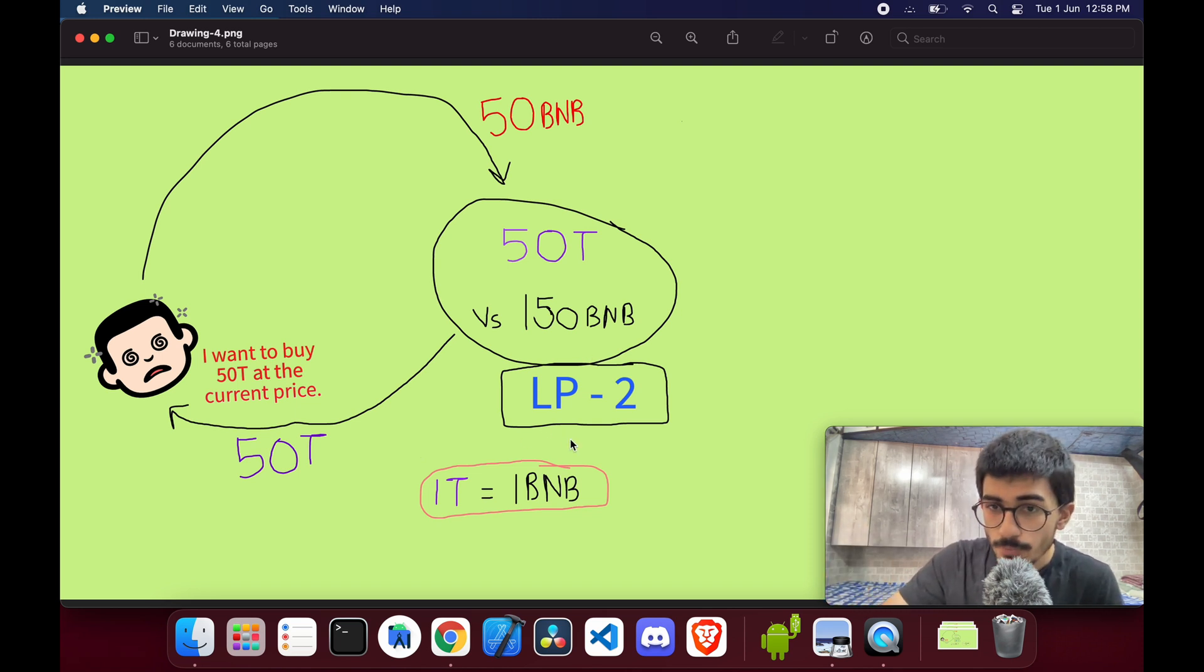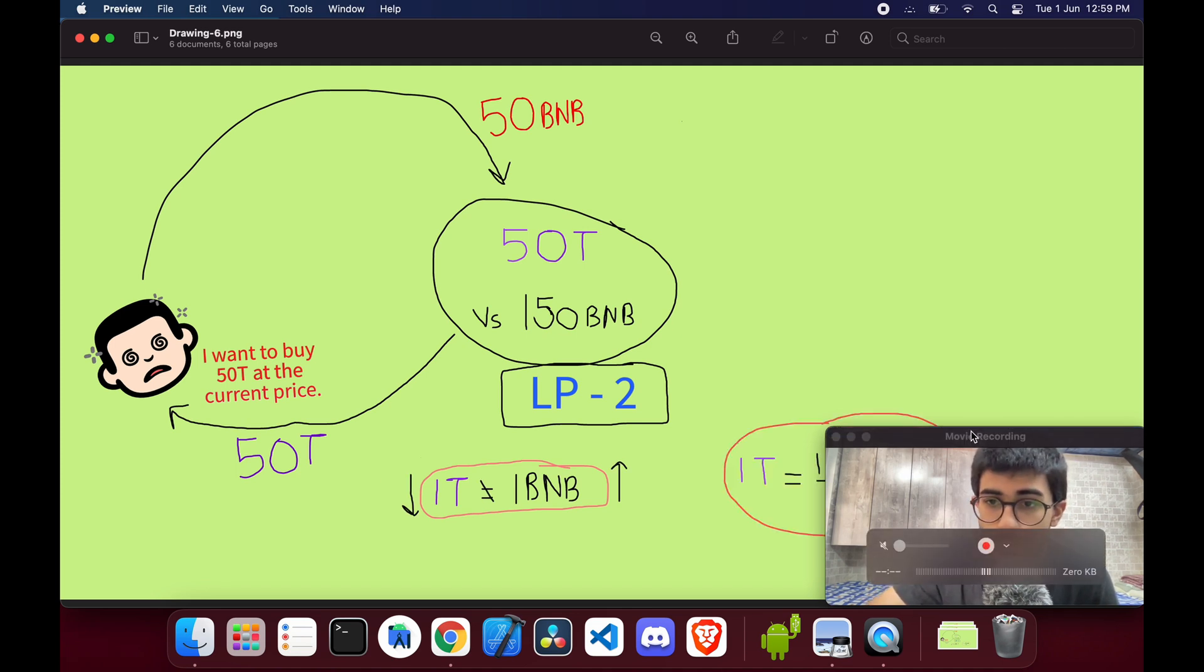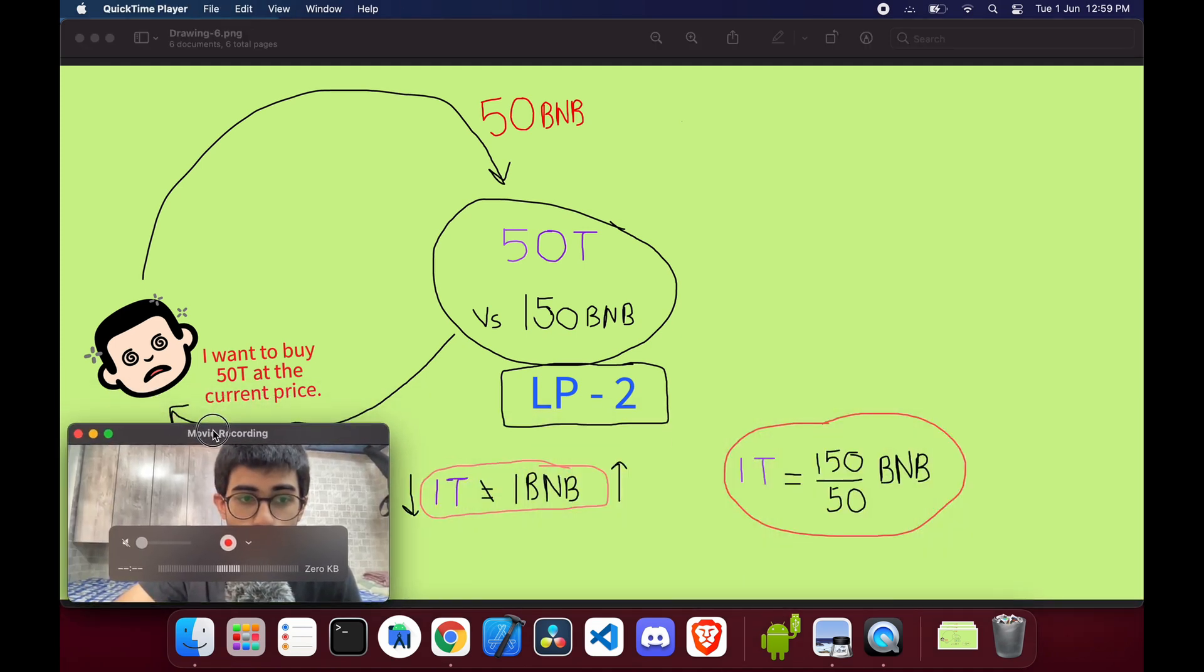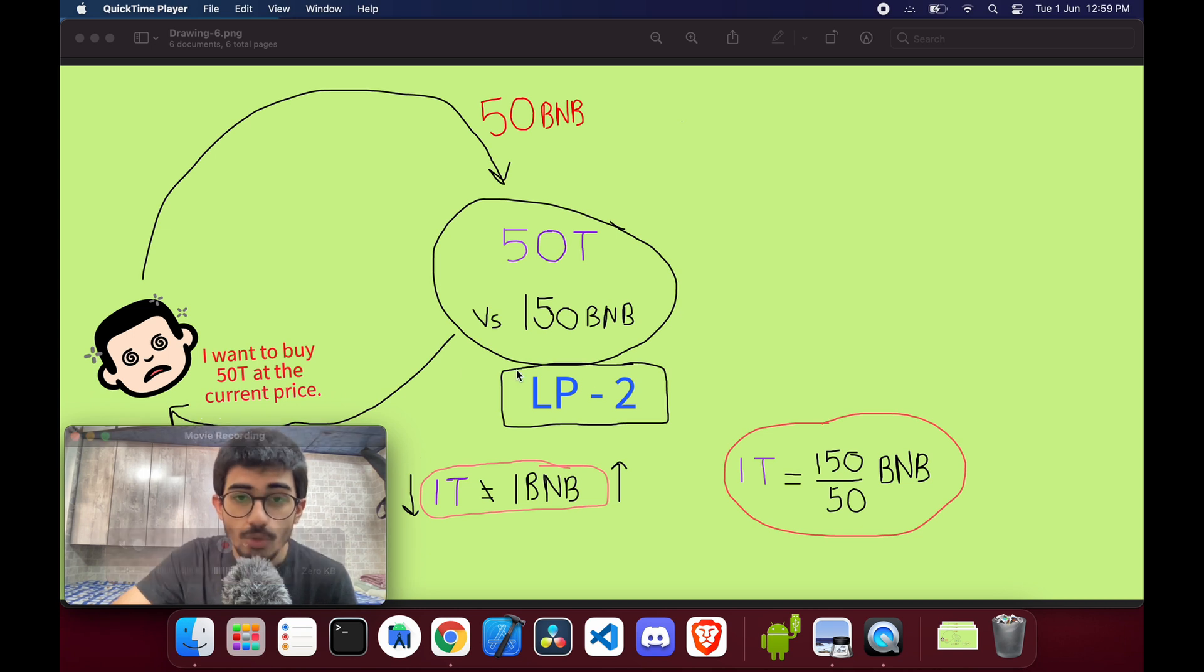So does the price of our token remain the same? Because the demand of our token has increased - we can clearly see that many people are buying it, this person just bought it - so the demand for our token has increased, so the price should increase as well, right? It does. How it does is the new liquidity pool is now used to set the price of the token.